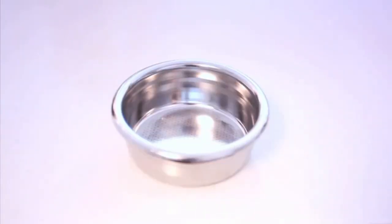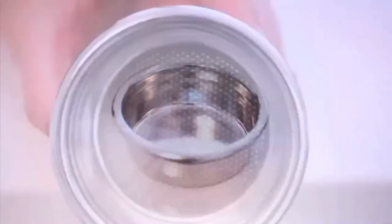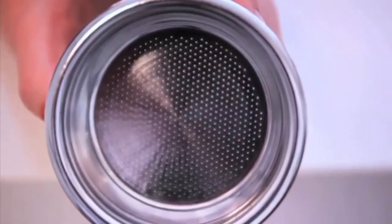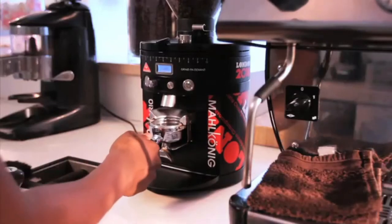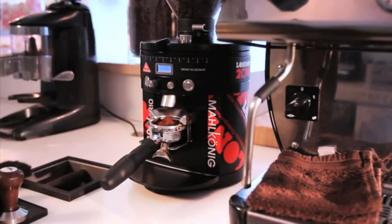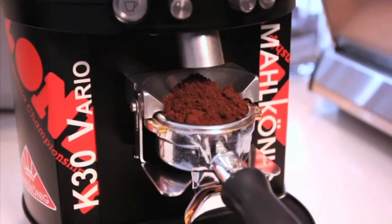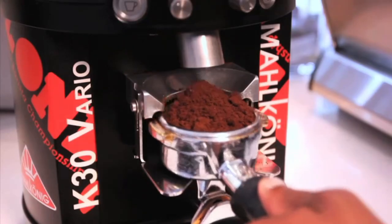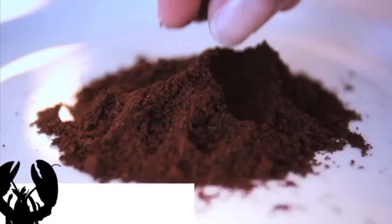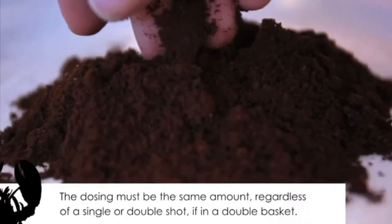The portafilter basket: this basket fits into the portafilter to hold coffee grounds and pull a shot of espresso. Some establishments would prefer using only the double shot portafilter basket and never the single shot portafilter basket. If you do however use the single basket, you will need to adjust the grind constantly to maintain espresso consistency. Remember though that you cannot only dose enough coffee for a single shot into a double basket. The dosing must be the same amount regardless of a single or double shot.